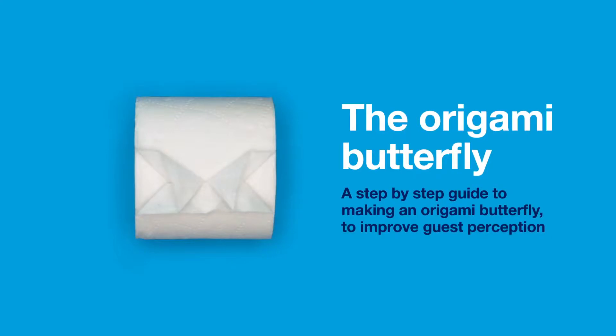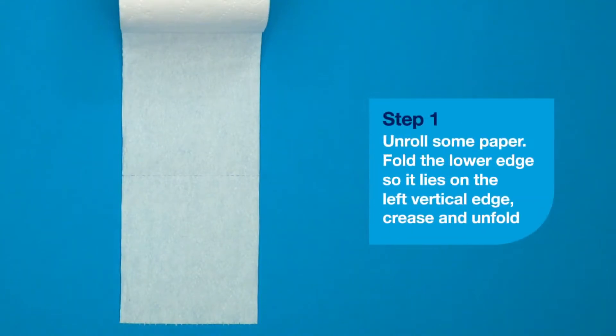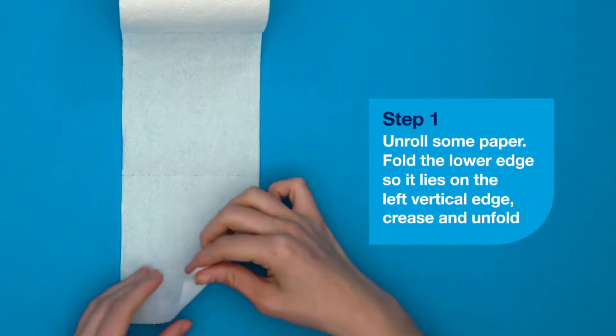Firstly, unroll some paper and fold the lower edge so it lies on the left vertical edge. Crease and unfold.